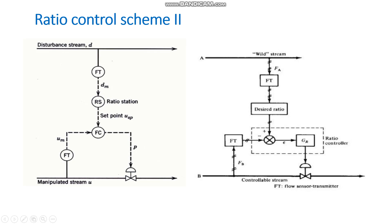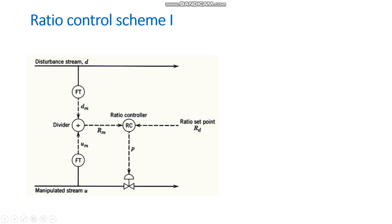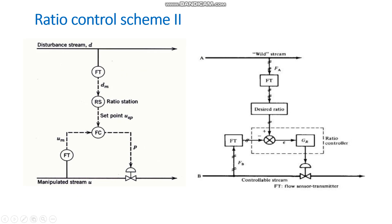In scheme two, the same disturbance variable and manipulated stream are present with a set point. From the ratio station, the set point is given to the flow controller. In scheme one, the set point was given directly to the ratio controller, but in scheme two, the flow meter measures the wild stream flow and the transmitter sends it to the ratio station, which then provides the set point to the flow controller.